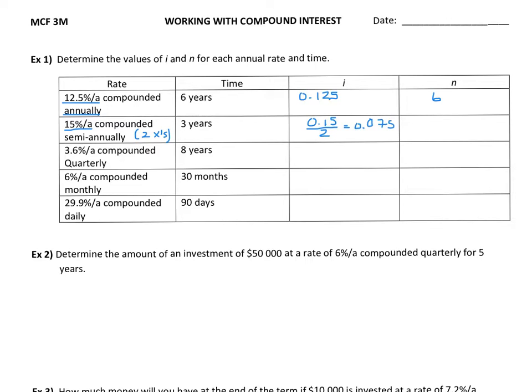The N value is your total number of times it's going to compound over the course of the term. So if it's compounding two times each year for three years, our N is 2 times 3, which equals six.